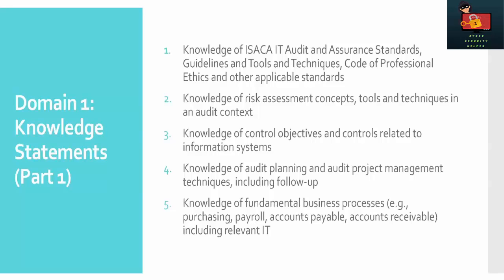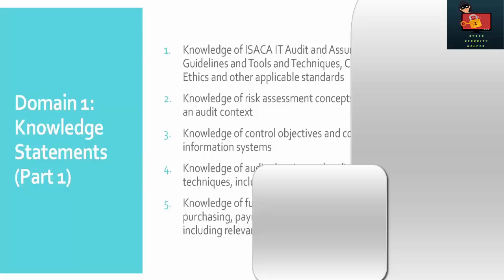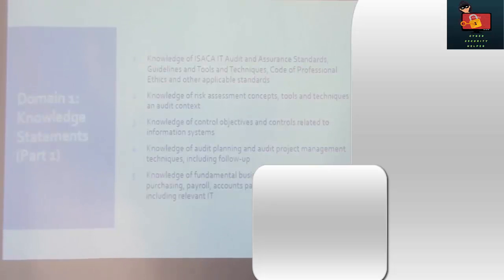Number three is knowledge of control objectives. Control objectives speak to the idea that the different security controls used in an information system or a financial system need to be understood. We need to understand the expected behavior of the controls, their planned inputs, and the expected output of those controls. Once you know those three items, you can evaluate whether the control is working correctly, and then move on or make recommendations for improvement.